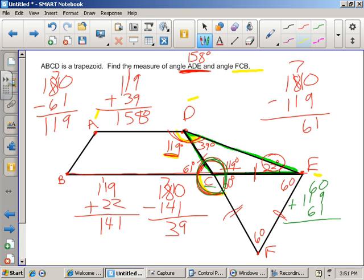60. 6 plus 1 is 7. 6 plus 1 is 7. 7 plus 7 is 14. I have 260, 200, excuse me, 240 degrees.